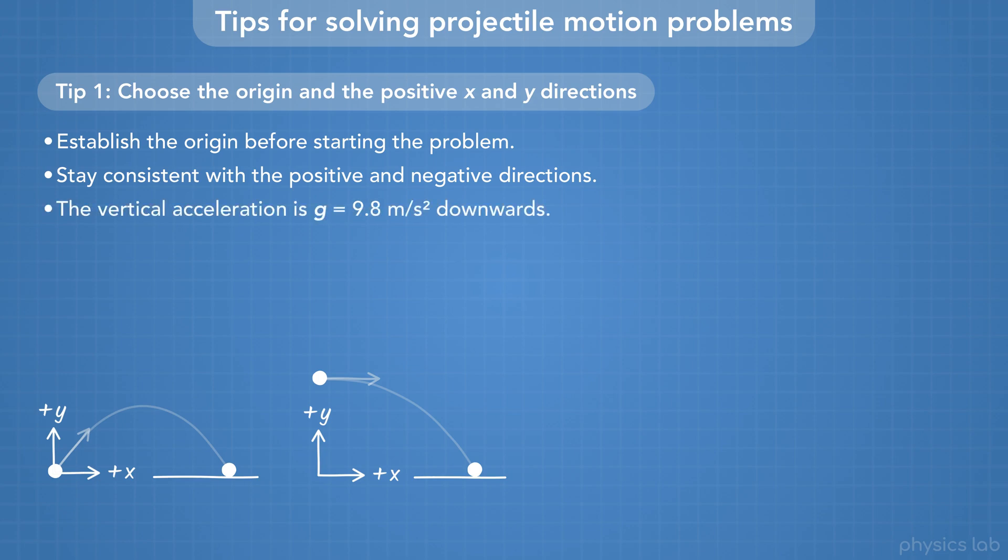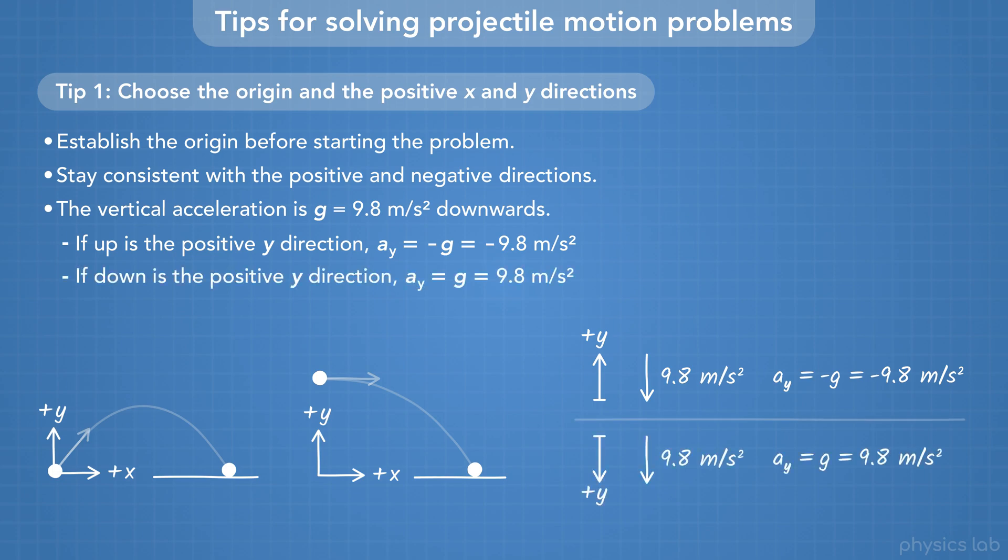The vertical acceleration is g, the acceleration due to gravity, which is 9.8 mps squared downwards. So if we say up is the positive y direction, gravity acts in the negative direction, and AY equals negative g. And if down is positive, gravity acts in the positive direction, so AY equals positive g.